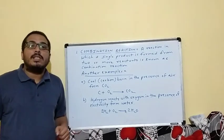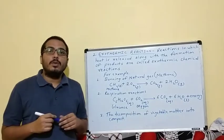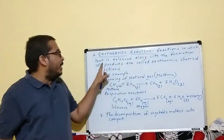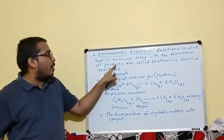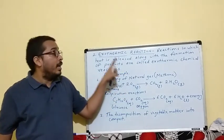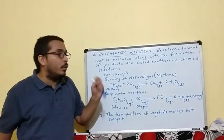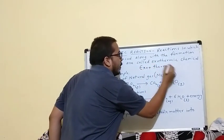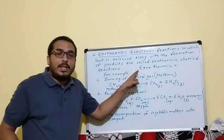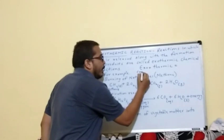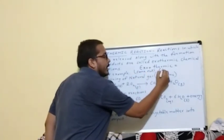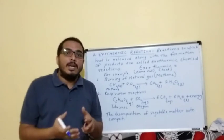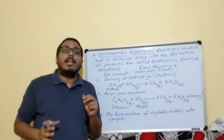Now we go towards our next type of reaction — exothermic reaction. The reactions in which heat is released along with the formation of products are called exothermic chemical reactions. The word exothermic is made of two words: exo, meaning 'come out', and thermic, meaning 'heat'. So any reaction or process in which heat comes out is called an exothermic reaction.